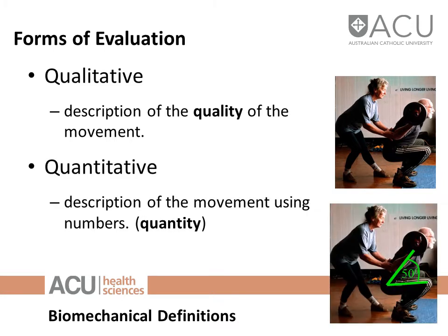If you then support that with numbers or calculations — for example, putting a measure of the angle between two segments in a particular picture — that would be a quantitative measure. 50 degrees there would be quantitative. To remember the difference: description of quality is qualitative, and when you're adding numbers you're quantifying it, and therefore it's quantitative.